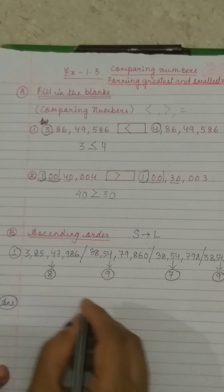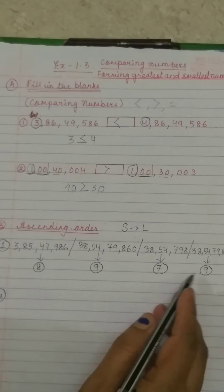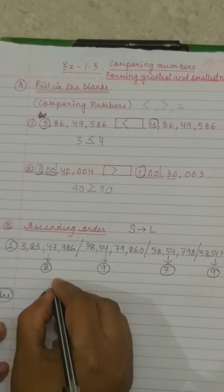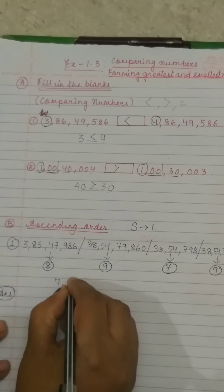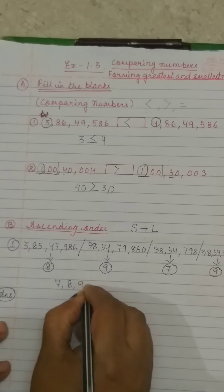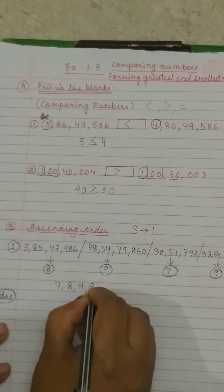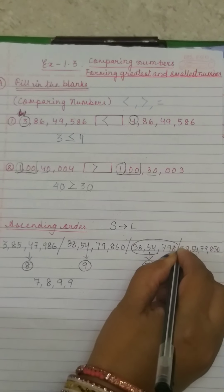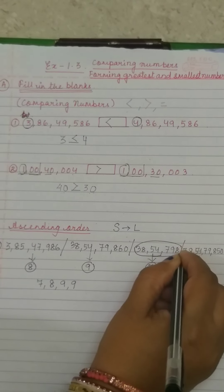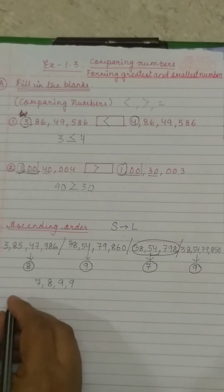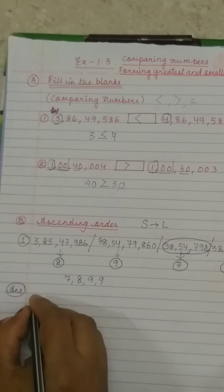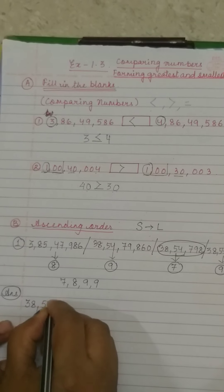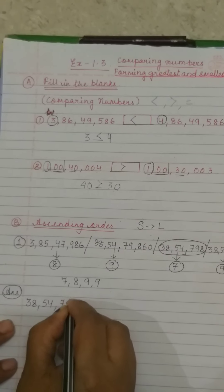So if I tell you to arrange all these numbers by their digit count from smallest to largest, you will say: 7 digits first, then 8, then 9 and again 9. So we always count the number of digits to find the smallest one and arrange in ascending order. The first number in the sequence will be 38,54,798.